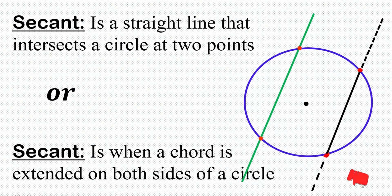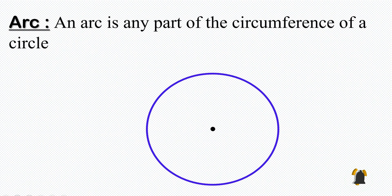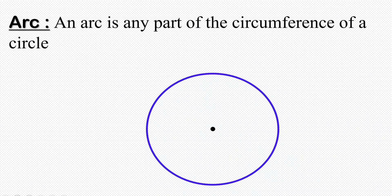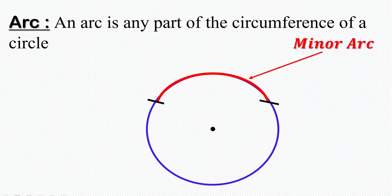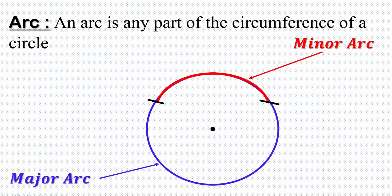The next terminology is arc. An arc is any part of the circumference of a circle. If we take a part of the circumference, we can term that as an arc. The smaller portion is known as the minor arc, and the larger portion is the major arc.